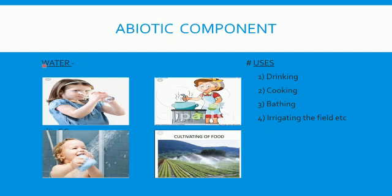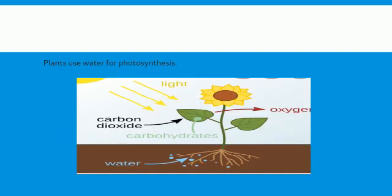The different uses of water include drinking, cooking, bathing, and irrigating the field — these are the common uses of water. Water is also used by plants, which absorb it from the soil with the help of their roots for the process of photosynthesis. As a result, they prepare their food and grow, and all animals and human beings are directly or indirectly dependent on plants for their food.